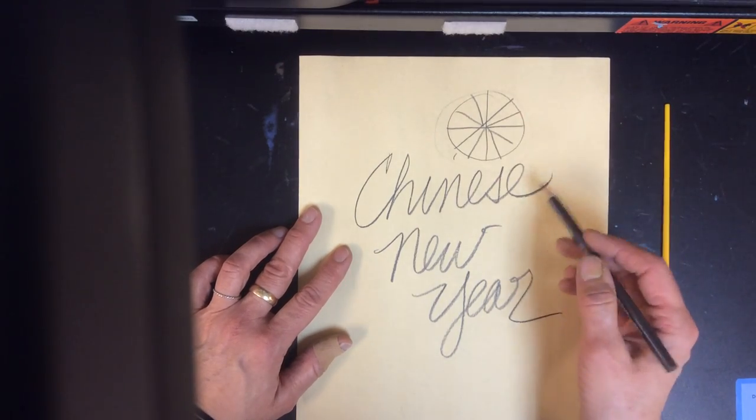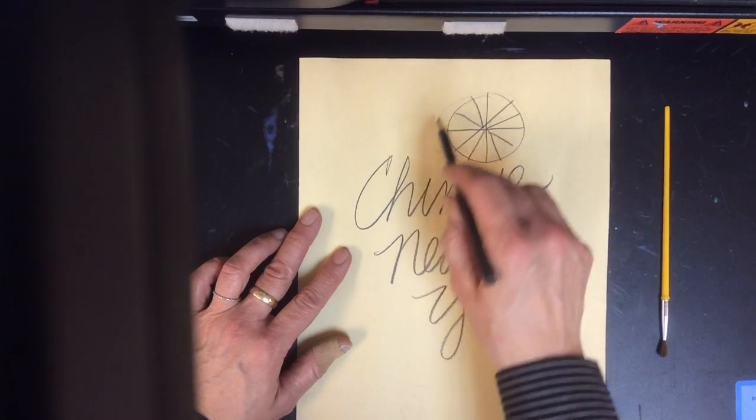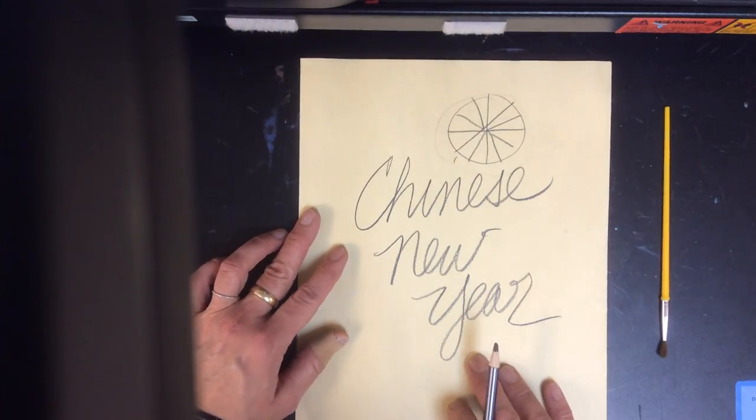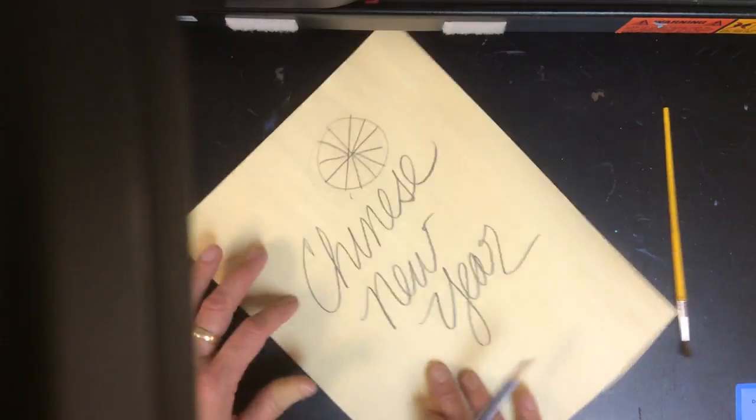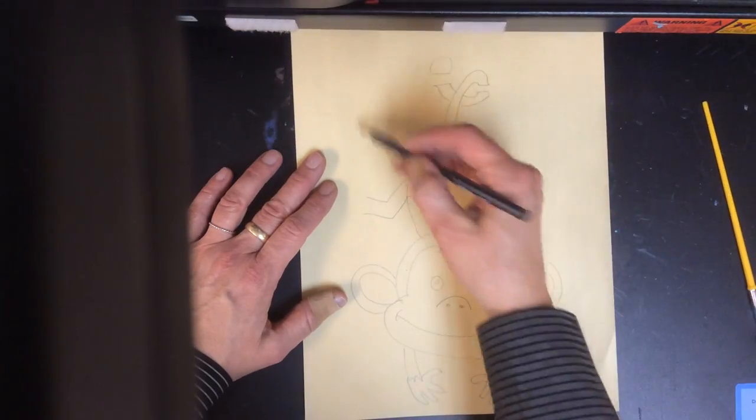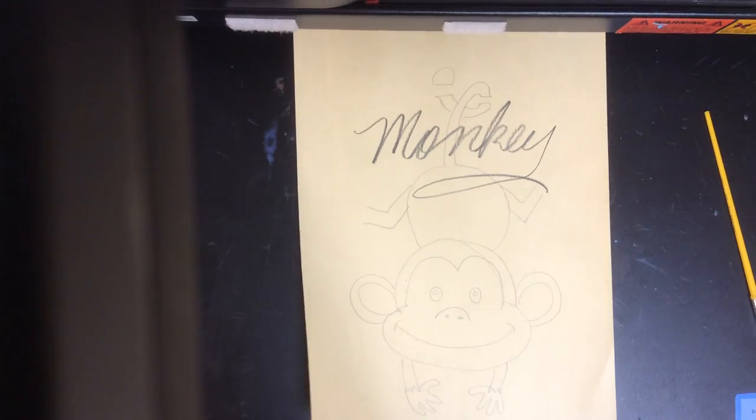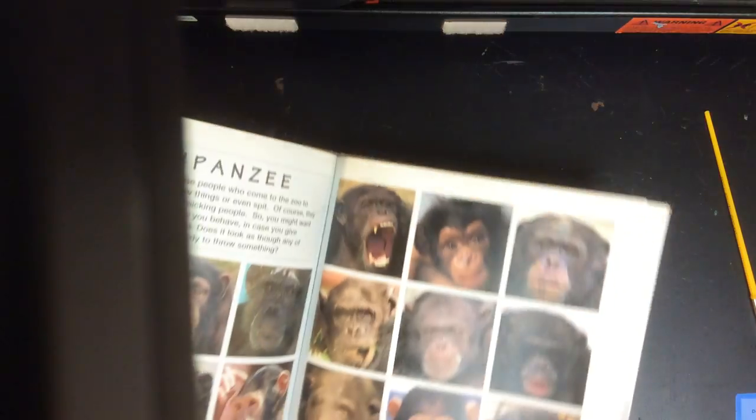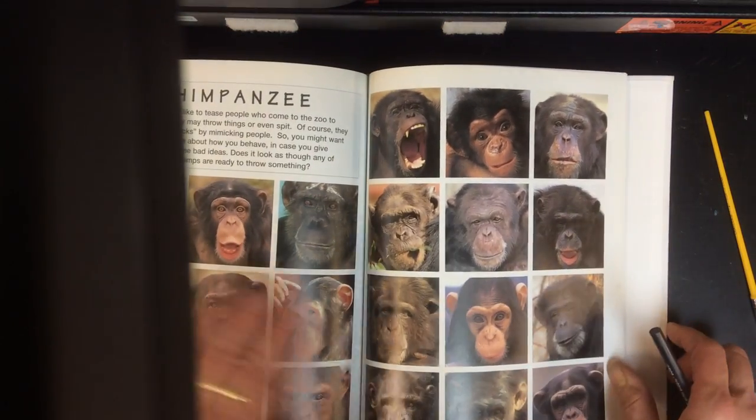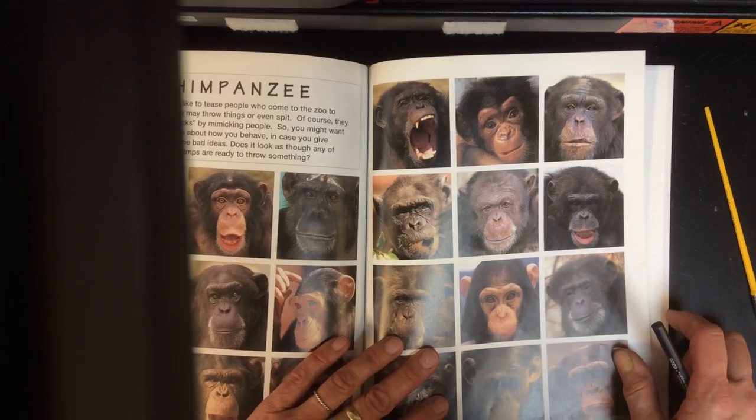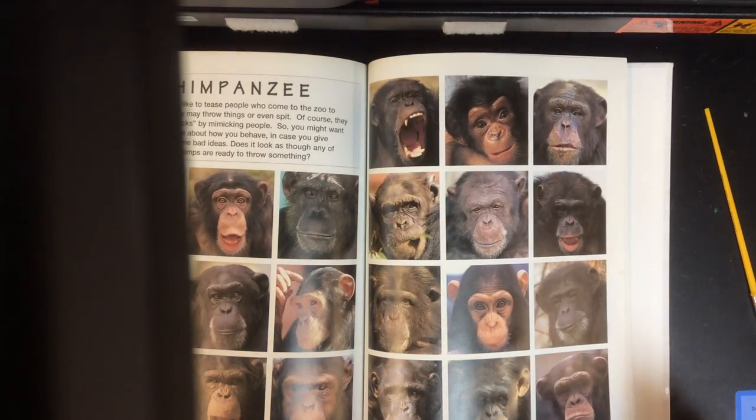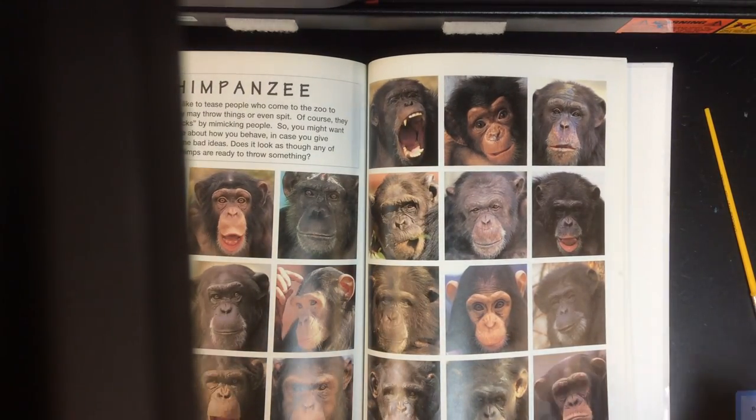Each section has a different animal, every year the animal changes, and then eventually it repeats again. This year is going to be the year of the monkey, so we are going to do a printmaking project based on a drawing that we're going to do today of a monkey.